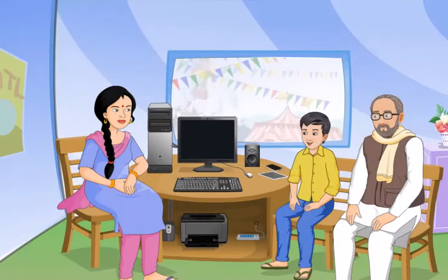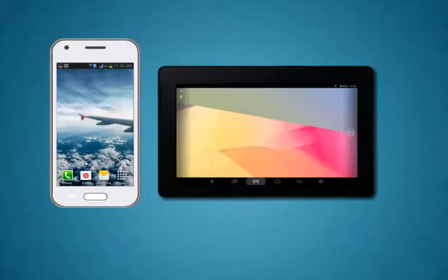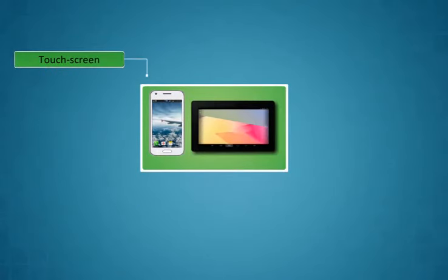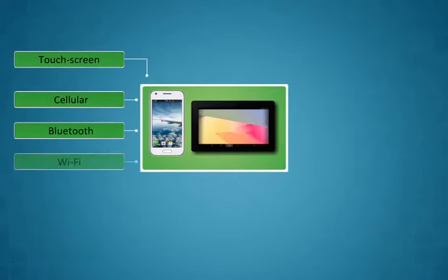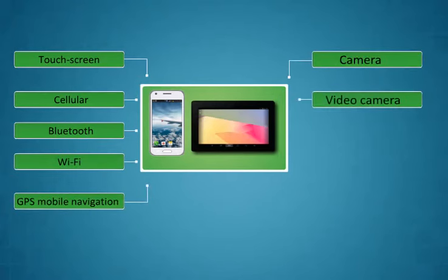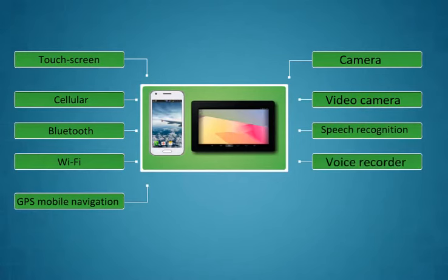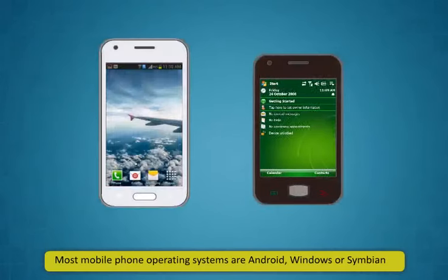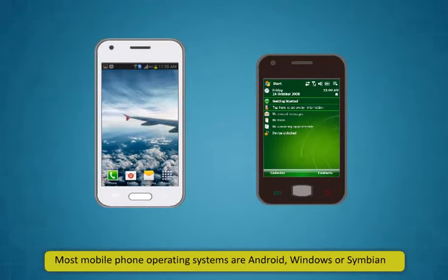Mobile phones and tablets also have operating systems. Nowadays, mobile phones or tablets combine the features of a personal computer's operating system with other features including touch screen, cellular, Bluetooth, Wi-Fi, GPS mobile navigation, camera, video camera, speech recognition, voice recorder, music player, and more. Most mobile phone operating systems are Android, Windows, or Symbian.